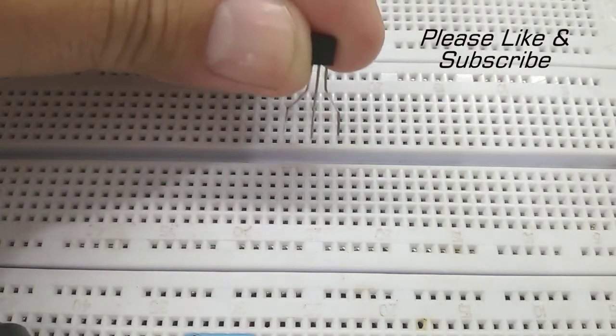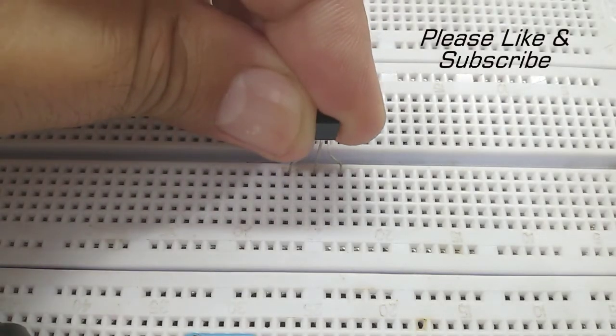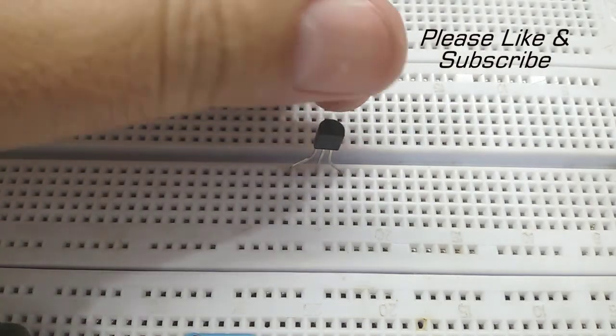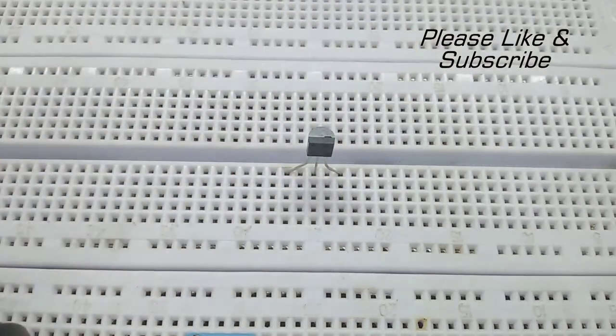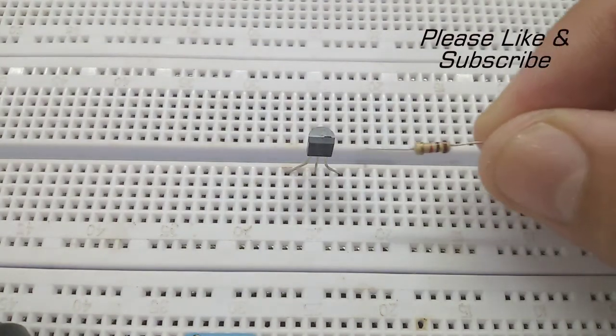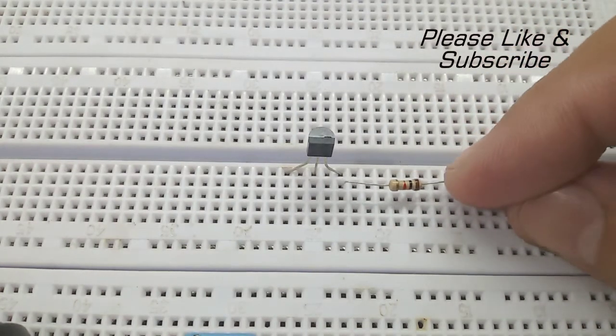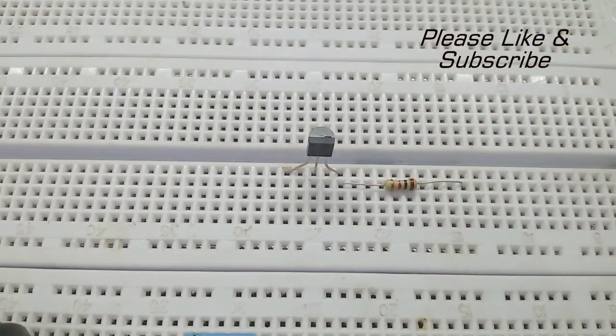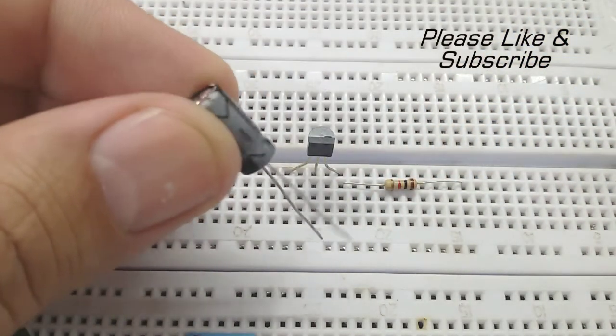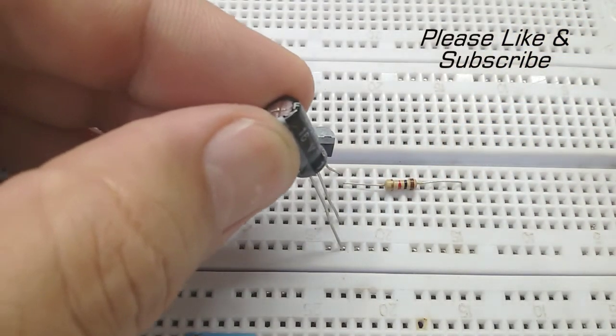Let's make the circuit. First, fix the VC547 transistor in the breadboard. Then, connect the 1kΩ resistor with the emitter of the transistor. After that, connect the positive pin of the capacitor with the emitter of the transistor.